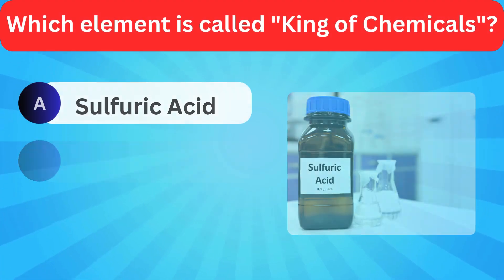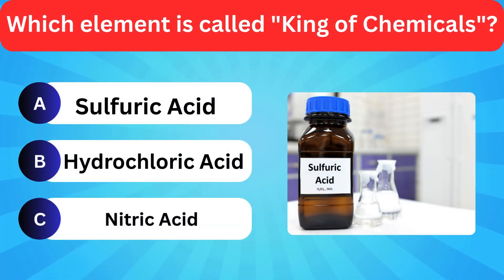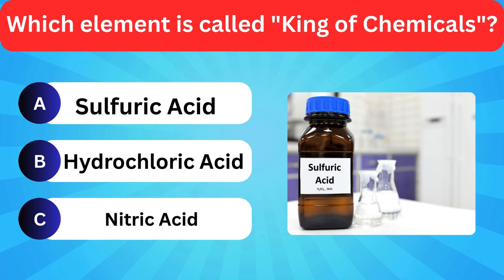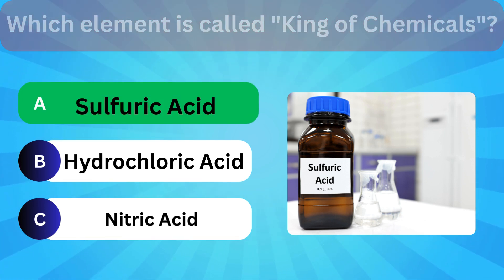Which element is called king of chemicals? Options: Sulfuric acid, Hydrochloric acid, Nitric acid. Correct answer is sulfuric acid.